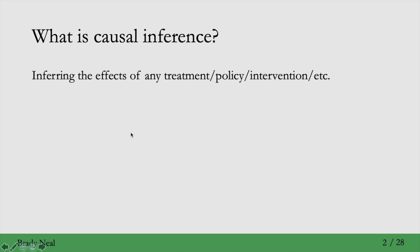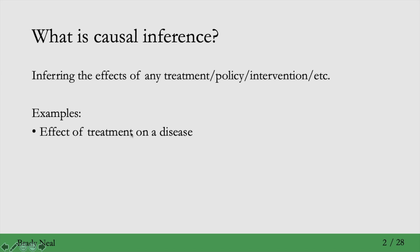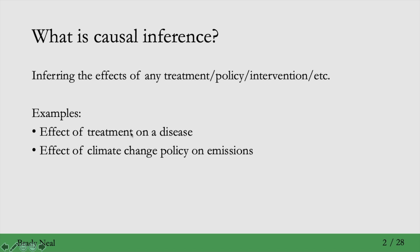What is causal inference? Causal inference is mainly about inferring the effect of one thing on another thing. You could be inferring the effect of any treatment, policy, or intervention, for example. Some examples are if you want to infer the effect of a treatment on a disease, or say you want to reduce emissions and you have multiple different climate change policies to do this — you might want to pick the policy that is most effective at reducing emissions, so it causes the largest reduction in emissions.